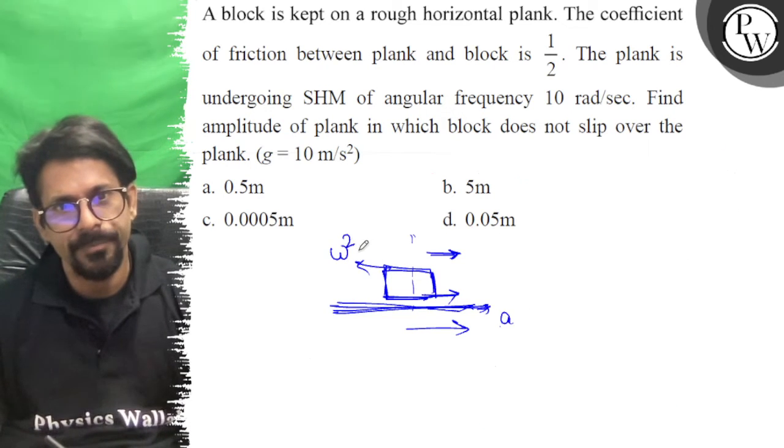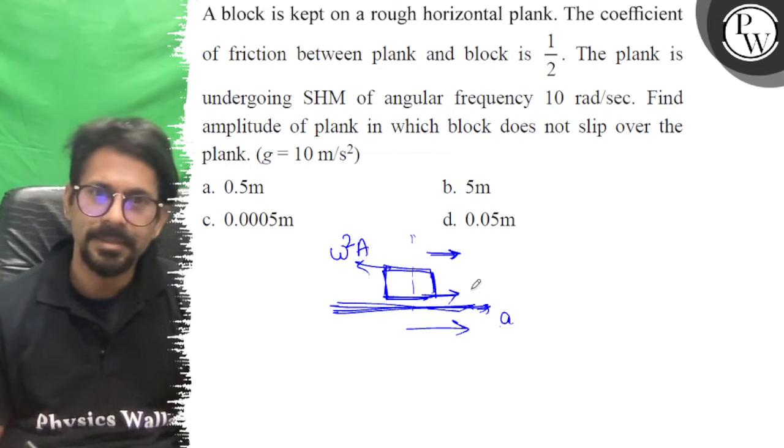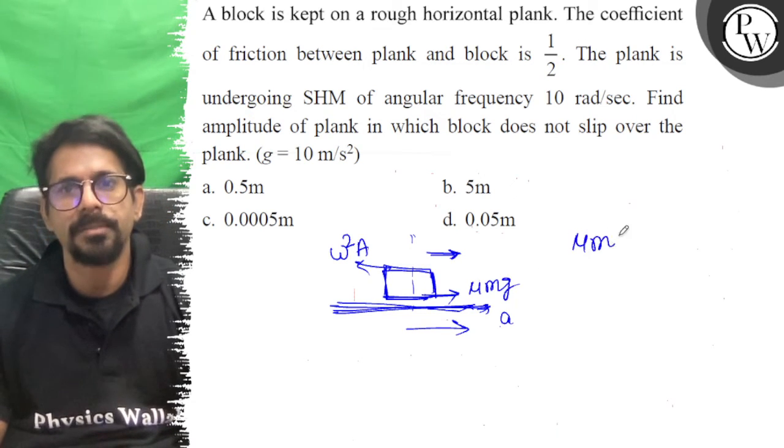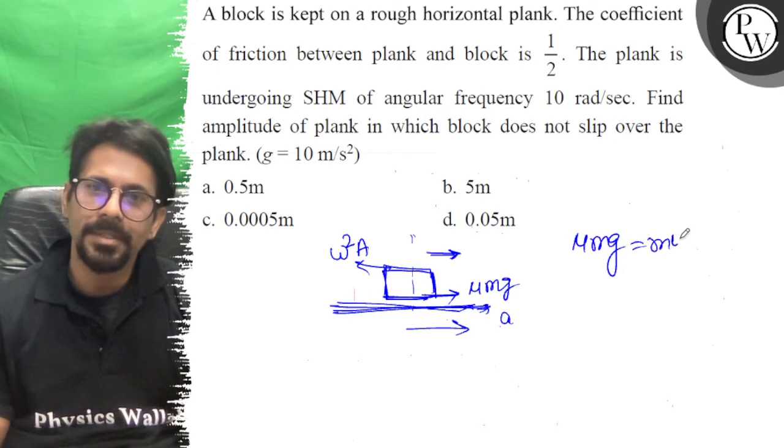So this is omega squared times A, the maximum acceleration, and that equals μ times M times G, the maximum static friction. So μMG equals M omega squared A.